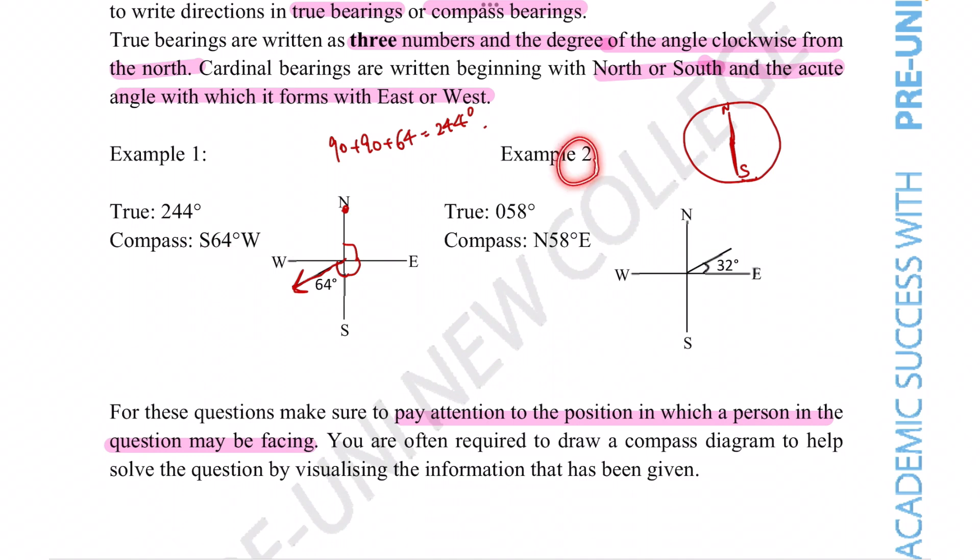So you write 244 true bearings as S64 degrees west. We see the opposite example with the second example here where if you're dealing with a more northeasterly direction, then the true bearing is just the 58 degrees from north. Remember, true always starts from the north, so this is 58 degrees. For the compass bearing, we start off with south or north and go with whichever the direction is closer to. So starting off with north, seeing what angle it makes with the easterly direction, it is still 58 degrees, so the compass bearing is north 58 degrees east.